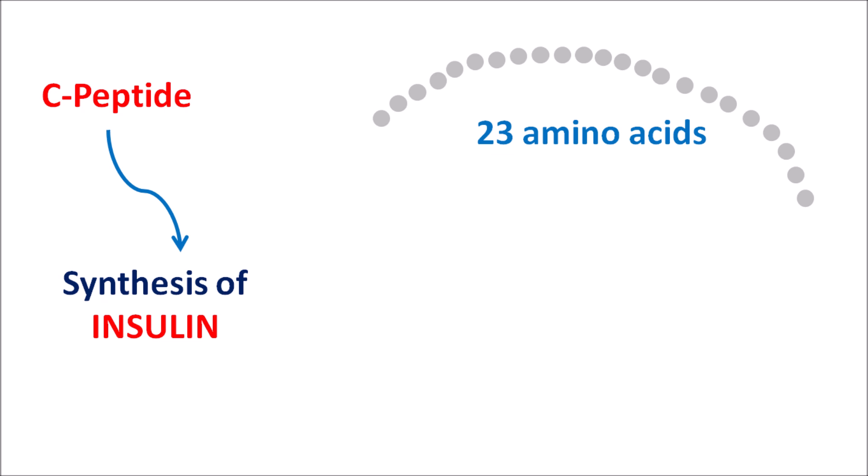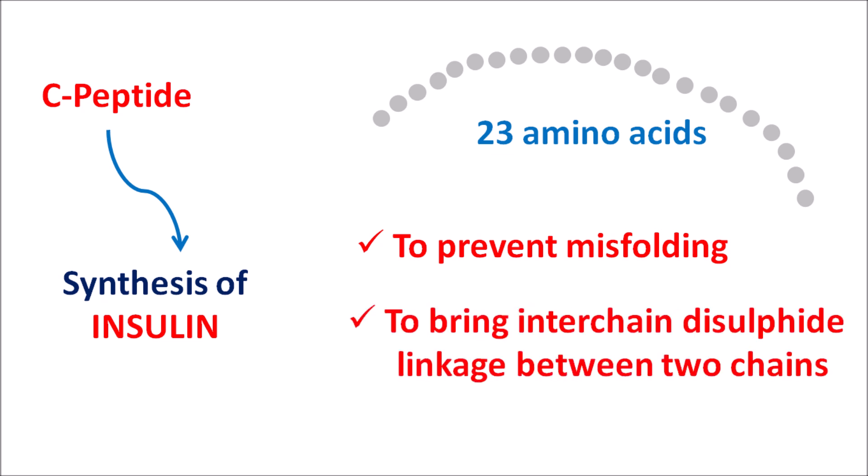C-peptide is required for the synthesis of insulin because during synthesis and release, the peptide chain should not be misfolded. C-peptide prevents the misfolding of the insulin structure. It is also required to bring inter-chain disulfide linkages between the two chains. Insulin has two chains, chain A and chain B, with two inter-chain disulfide bridges formed in the presence of C-peptide, stabilizing the insulin structure.